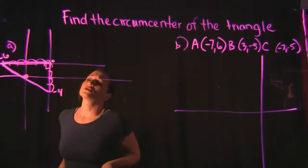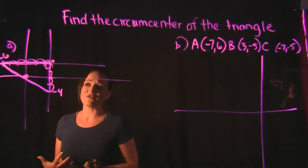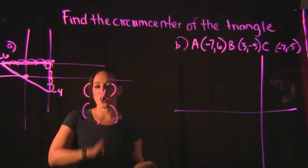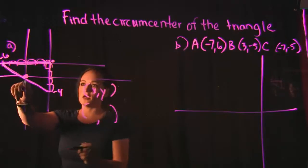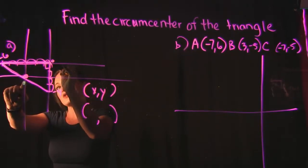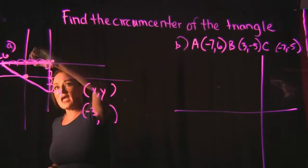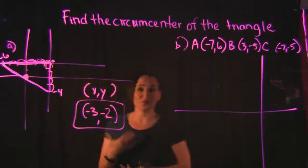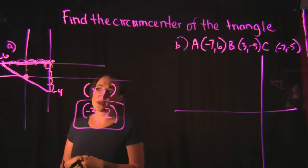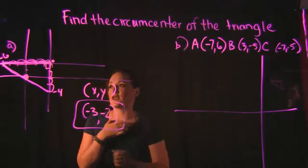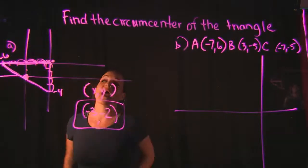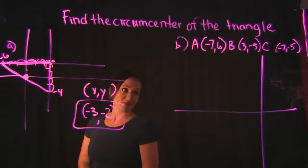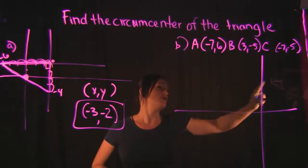When we do this, we've created two new lines. The point of intersection — where those two lines cross — is our circumcenter. We need to pick out that point from our graph. A point is made up of an x and y value. The x value is going left three units, so that's negative three. We're going down two units, so that's negative two for y. Our circumcenter is (-3, -2).